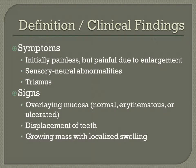Typically, the mucosa over the lesion will appear normal until the mass becomes so large, in which case the mucosa may become erythematous or ulcerated. If the lesion is within bone near the alveolar ridges, the expansion will often cause displacement issues. Fibrosarcomas can be seen as a growing mass with localized swelling, especially when they invade the soft tissue.